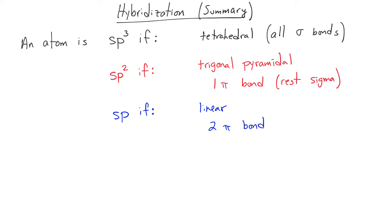That can be either — in the case of carbon — a triple bond, which would be an example of that, or also a carbon, nitrogen, or any atom that has two double bonds, which would also be an example of something that is sp. So in both of these cases, these molecules are linear, and that's really the determining factor. So if it's sp3, it's going to be tetrahedral; sp2, it's going to be trigonal planar; if it's sp, it's going to be linear.